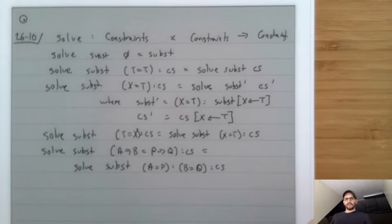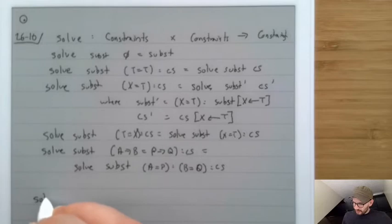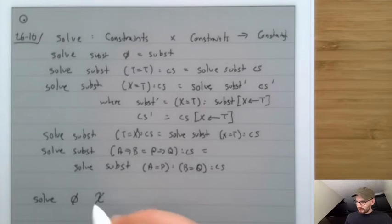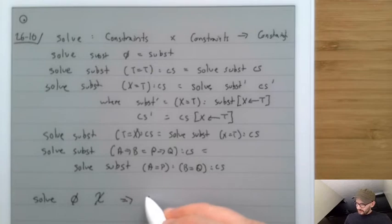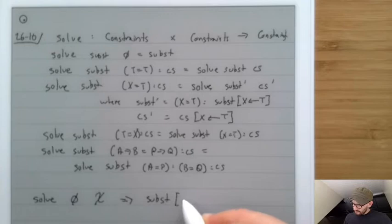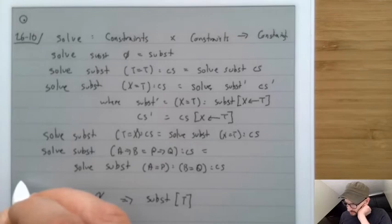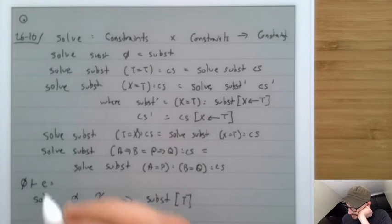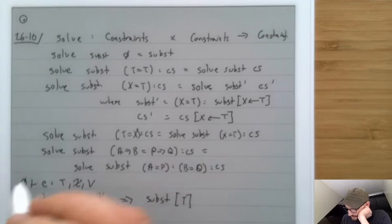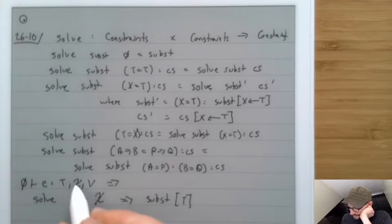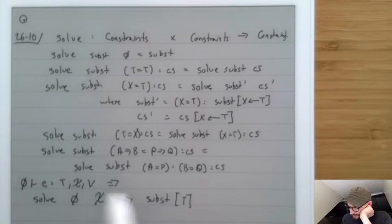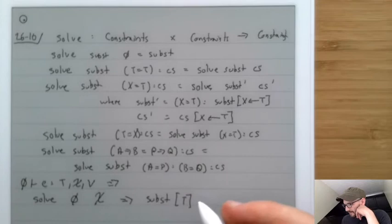To use this: call the type checker on an expression e with empty gamma to get type t, constraints chi, and variables v. Then call solve with the empty substitution and chi. The result is a substitution from which we look up t to find the final type of the program.